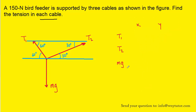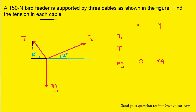We'll organize the three forces on the left side of the table and the x and y components along the top. Since mg is pointing strictly downward in the y direction, it has an x component of 0, and its only component is the y component. For T1, it has an x component pointing to the left and a y component pointing upward.